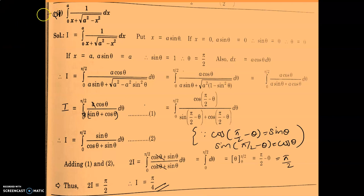The first question is integral 0 to A of 1 upon (x plus root of a square minus x square) dx. Let i equal to integral 0 to A of 1 upon (x plus root of a square minus x square) dx. We have already studied special substitutions in indefinite integration. If the term is root of a square minus x square, then in place of x you put x equal to a sine theta.